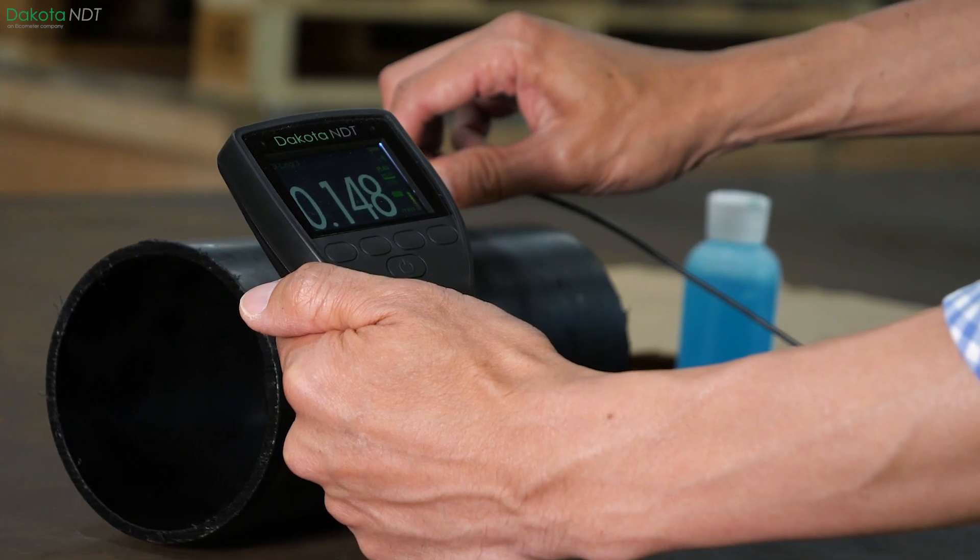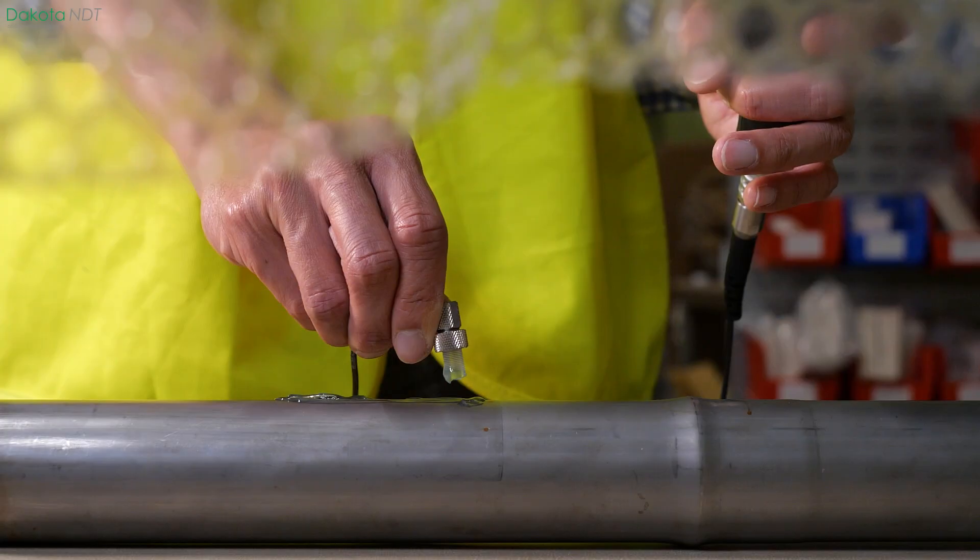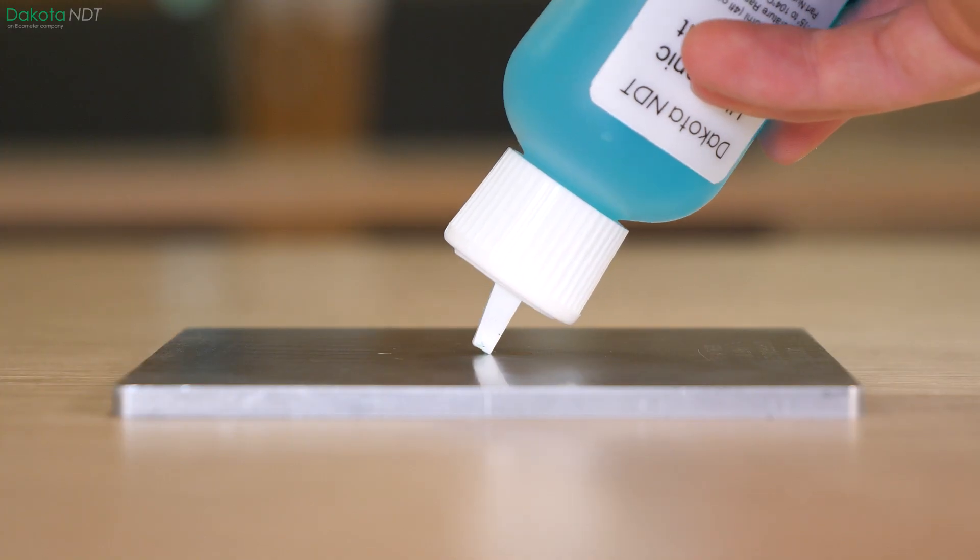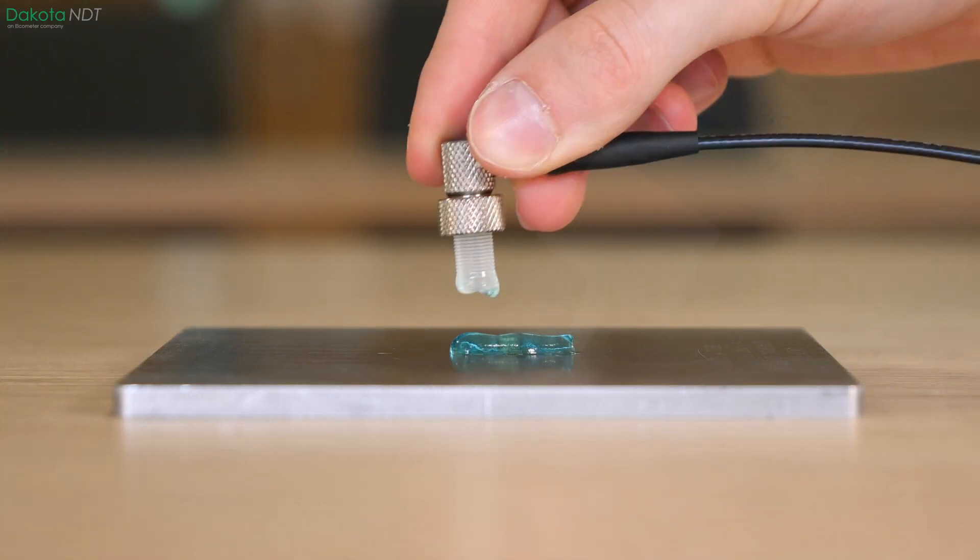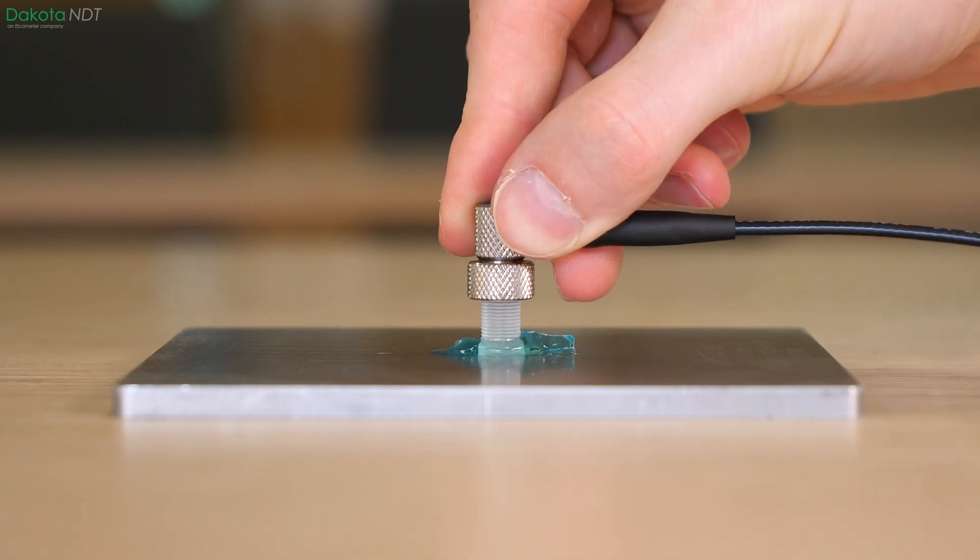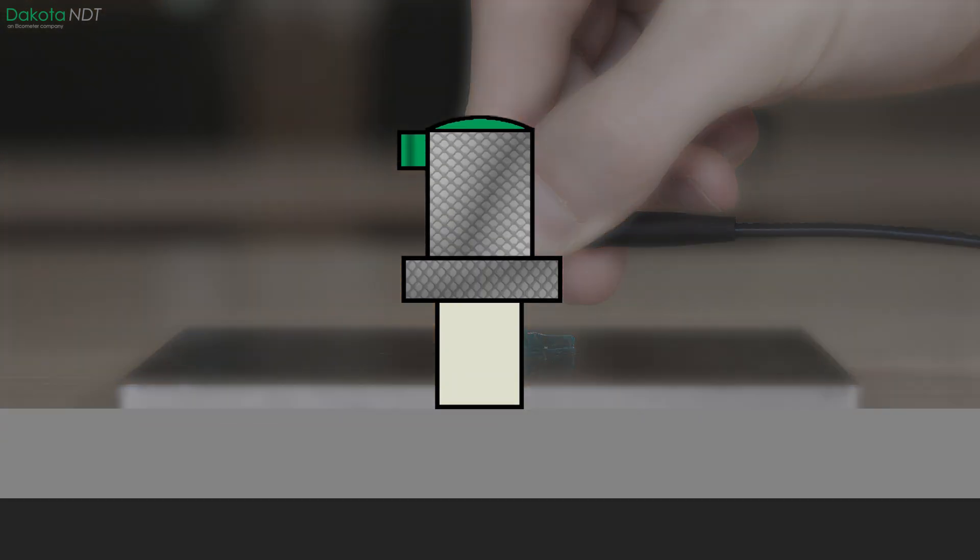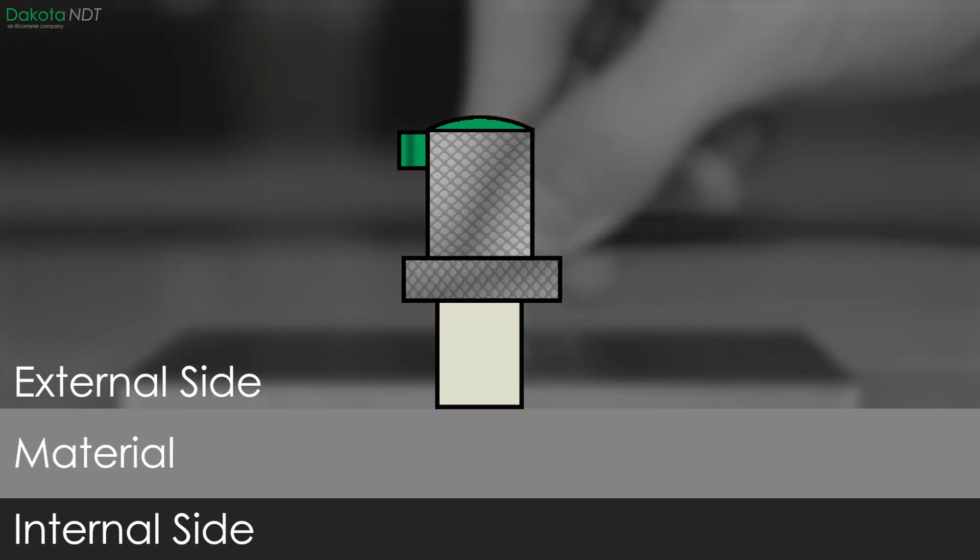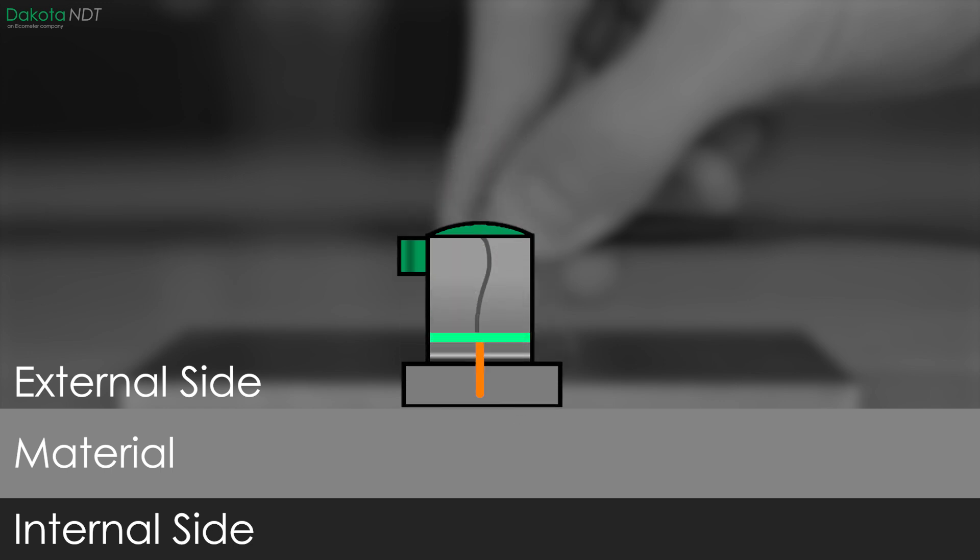Alternatively, the Dakota PCX range of ultrasonic precision thickness gauges uses single element delay line transducers to measure uncoated materials as thin as 0.15 millimeters. Single element transducers, as the name suggests, consist of one crystal which both emits and receives the ultrasound pulse. The pulse, once again, travels between the transducer and the material via ultrasonic couplant.